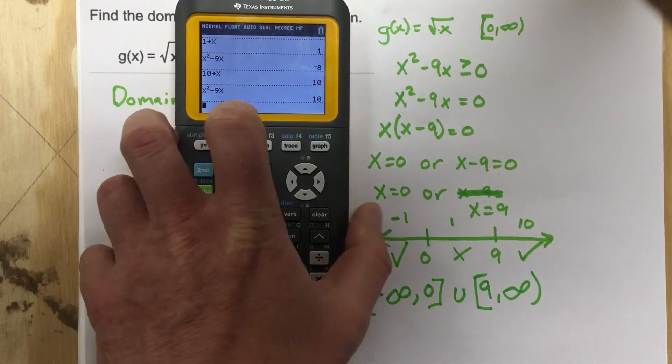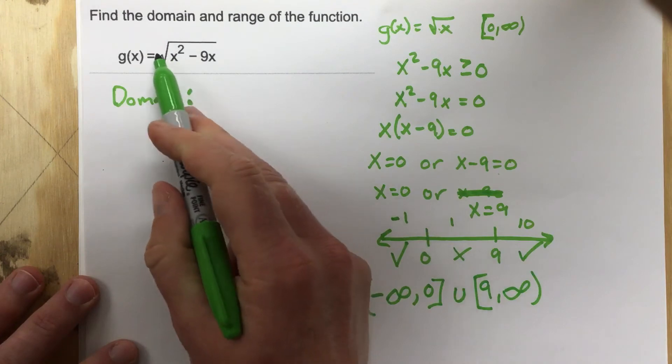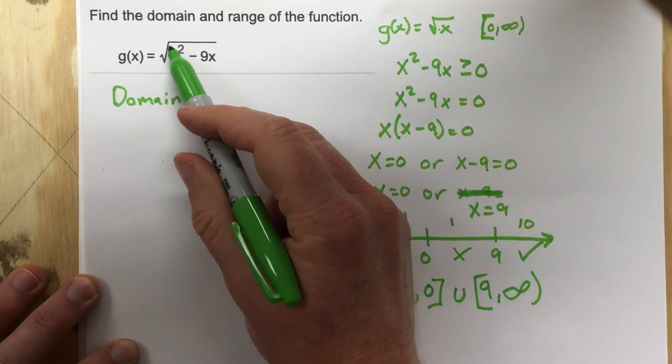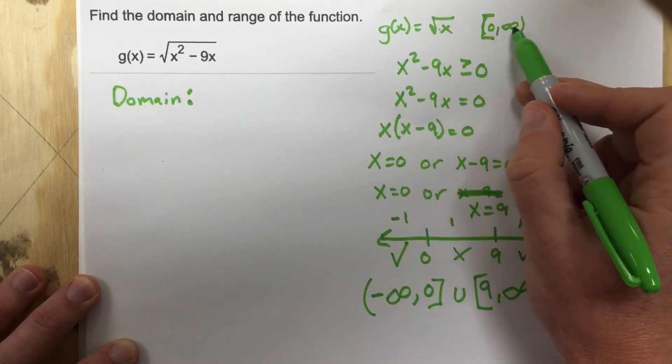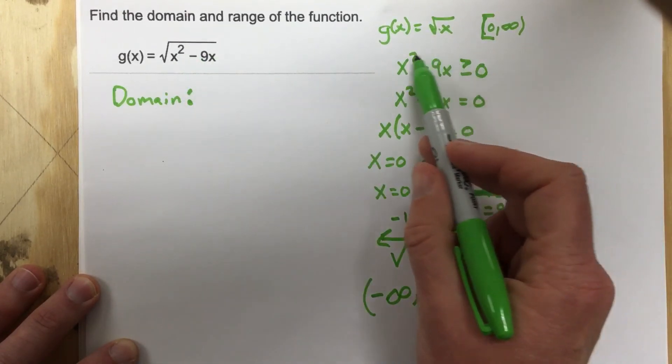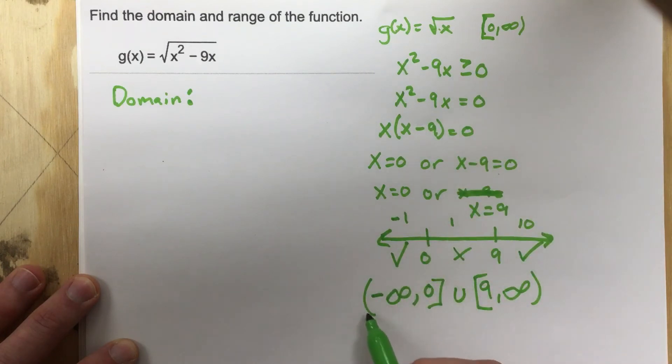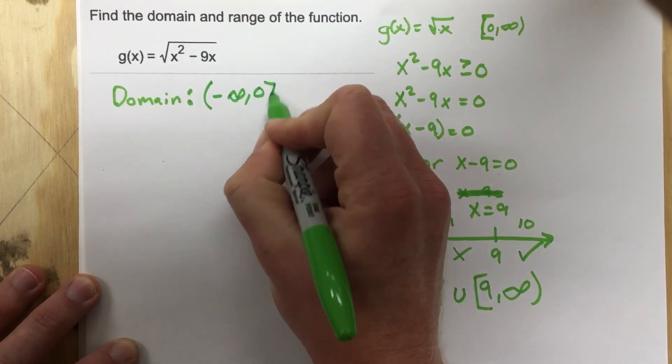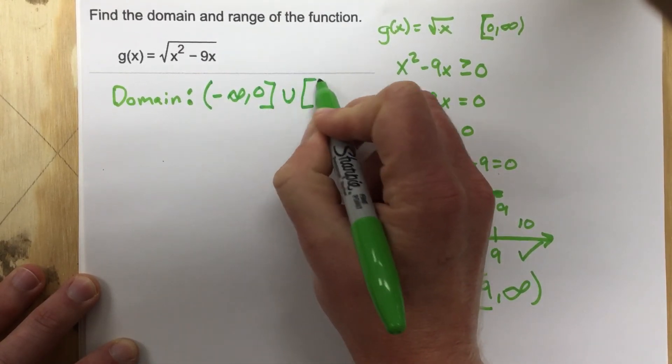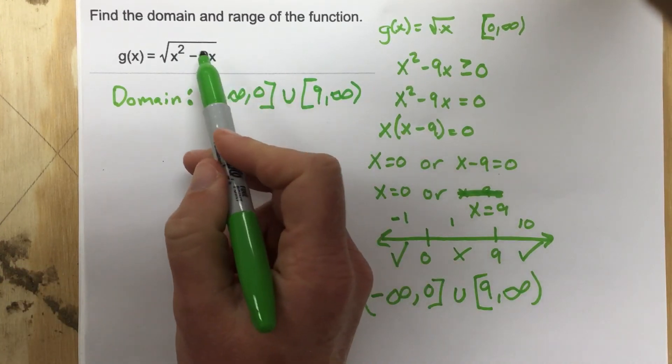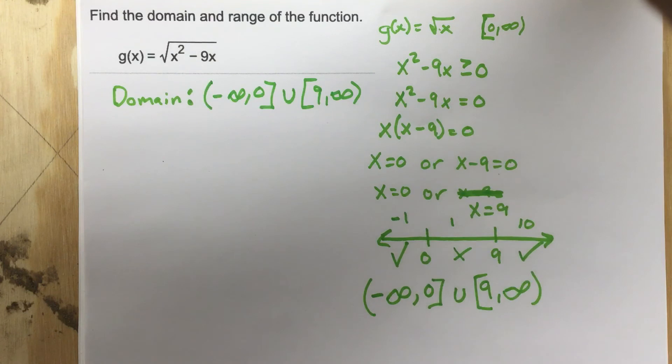So what's that mean about the domain? Well, I know that the domain of a radical function, regular radical function, goes from zero to infinity. So x squared minus 9x has to give me something greater than zero. Well, I know that occurs when I'm between negative infinity and zero and nine and infinity. So this is actually the domain of the function. And all we had to do to find that domain is set the inside greater than or equal to zero and solve that to figure out the domain.